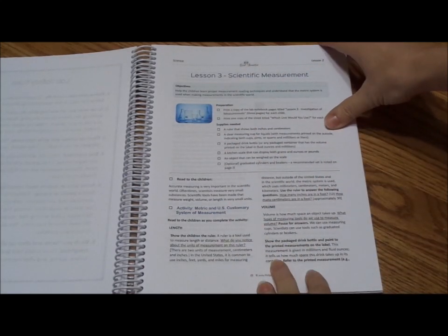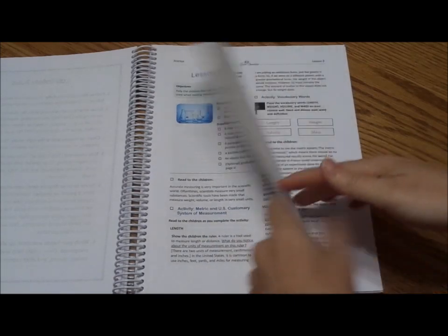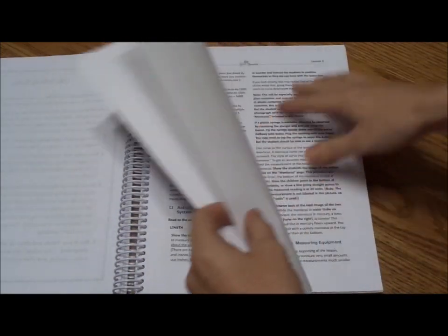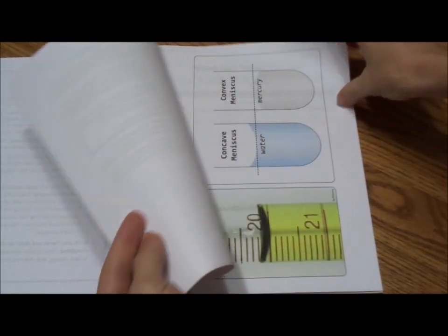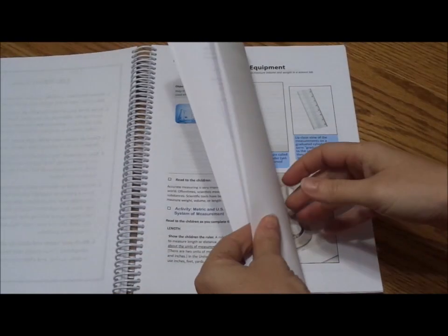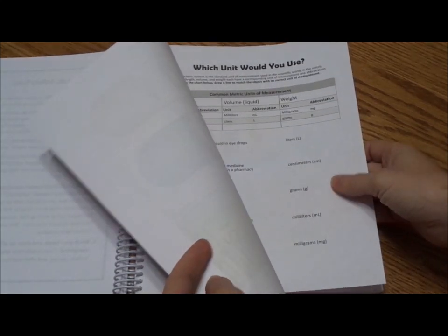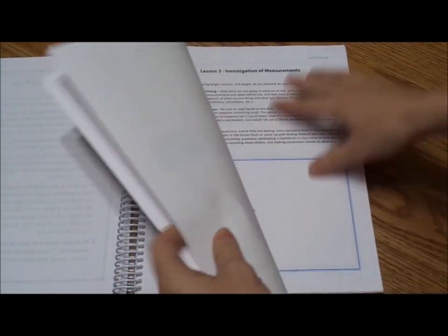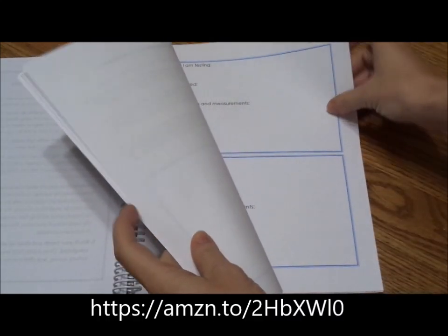Then we get into Scientific Measurement. It doesn't just hit on customary versus metric measurements. It talks about volume. It talks about the calculations that you will need to be doing. It talks about conversions. There is another lab. There are ways to use your equipment. You're going to need to get a chemistry set to use with this. We've got a great one. I'll link that up in the video.